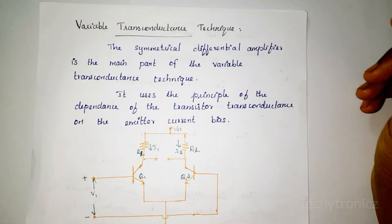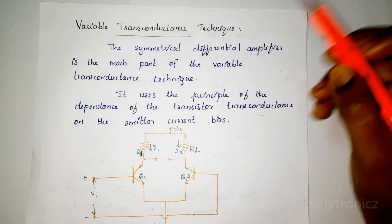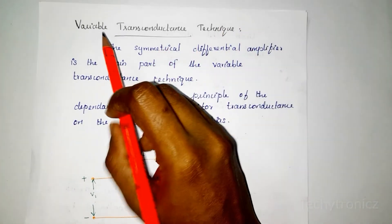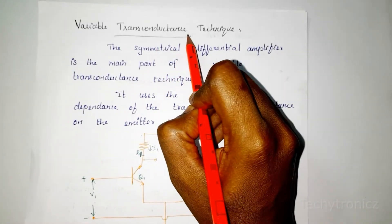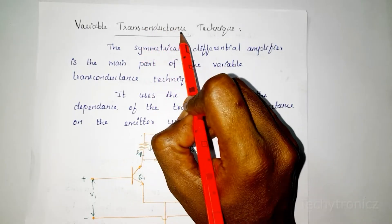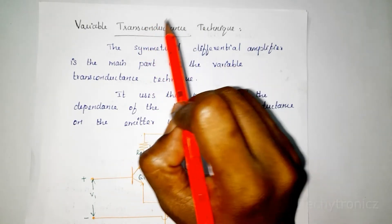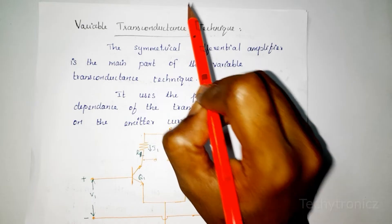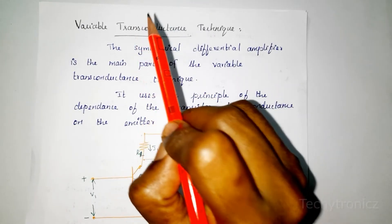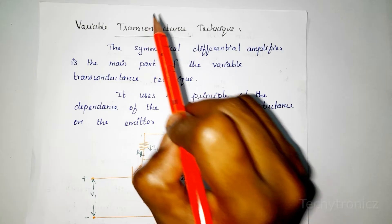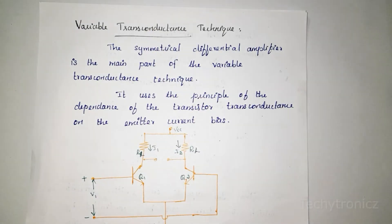Hi students. In this video we will talk about Variable Transconductance Technique. We will talk about the Analog Multiplier. An Analog Multiplier is a device whose output voltage or current is directly proportional to the product of two or more independent input voltages or current.